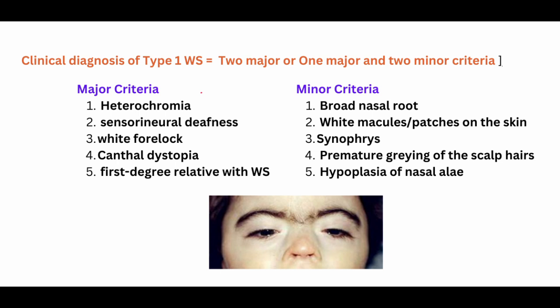To get a clinical diagnosis of type 1 Waardenburg syndrome, there should be two major or one major and one minor criterion.